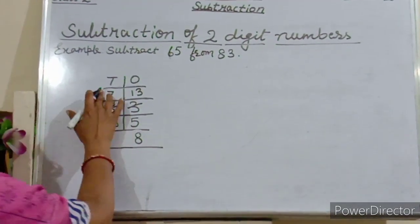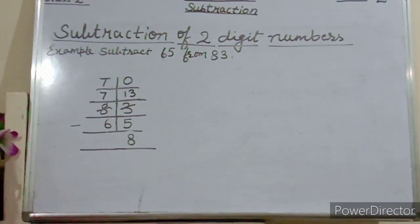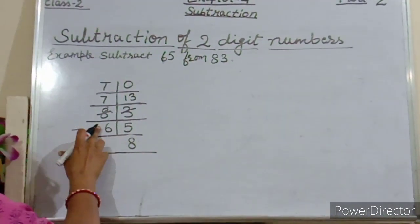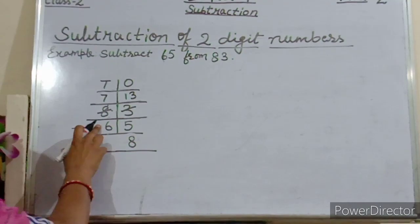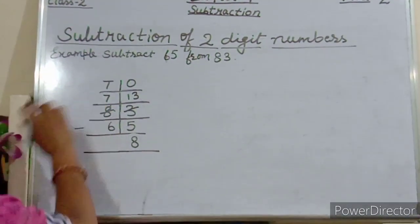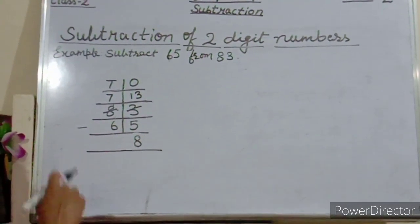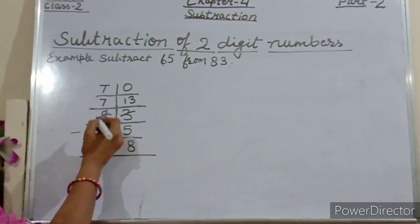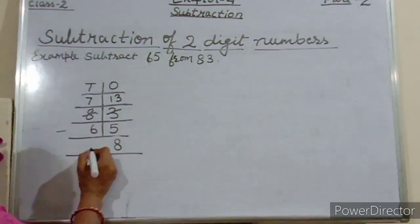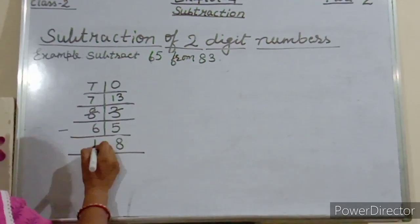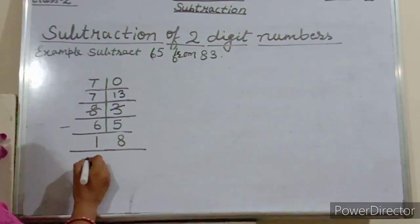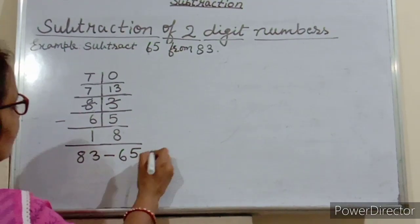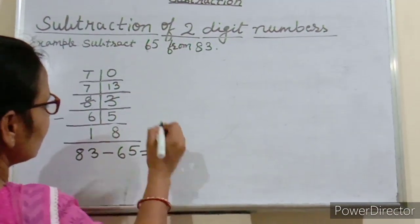Now come to the tens place. You have to subtract 6 tens from 7 tens. So 7 minus 6 is equals to 1. See, students, 83 minus 65 is equals to 18.